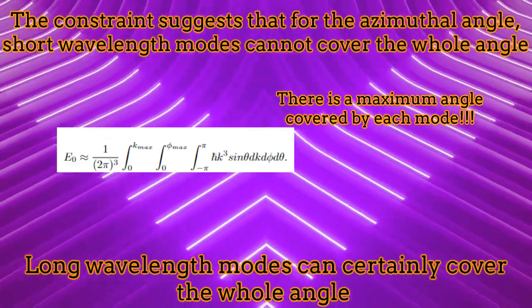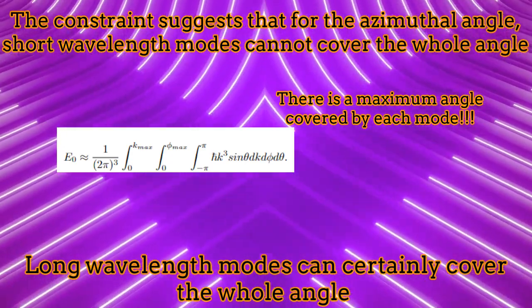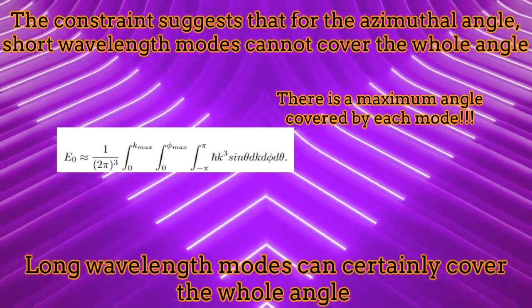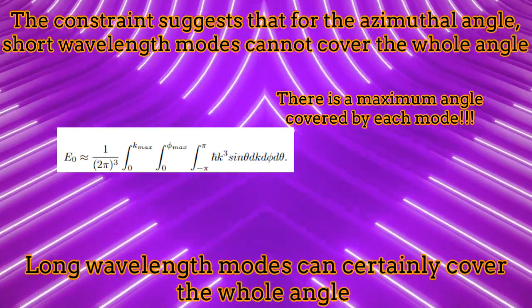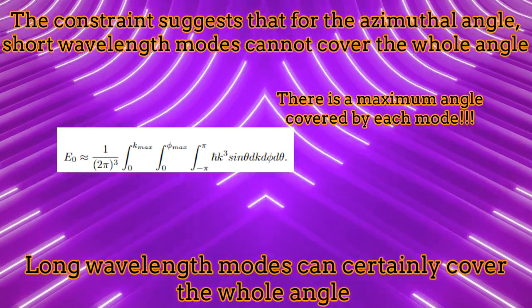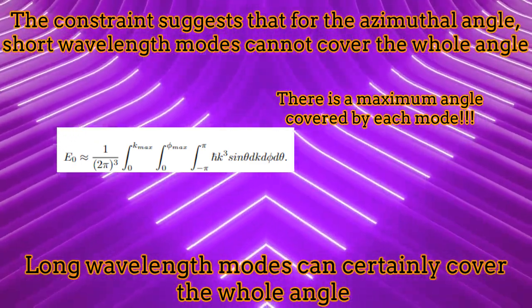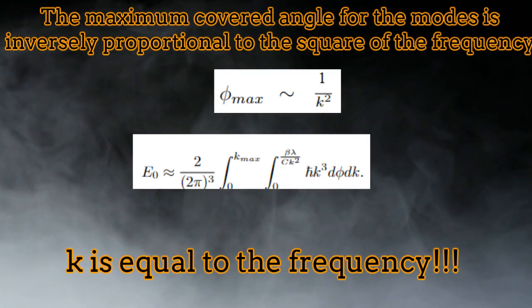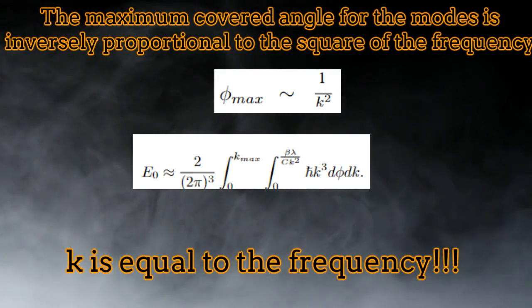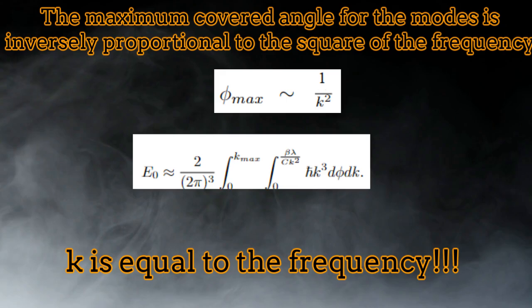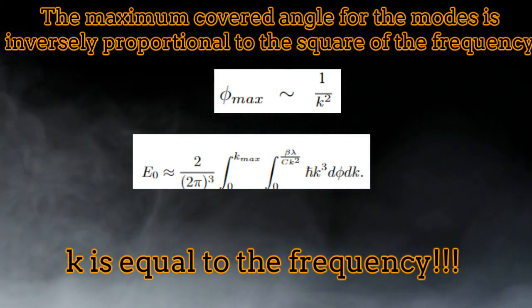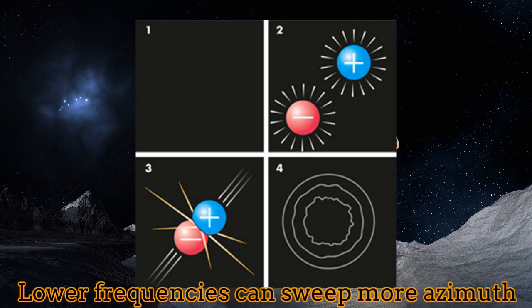More specifically, there is a maximum azimuthal angle for each frequency mode. The larger the frequency of the mode, the shorter will be the angle which the mode is able to cover over the integral. Then, naturally, the integration gets some suppression. More specifically, the maximum azimuthal angle covered by each mode is inversely proportional to its frequency. This makes sense physically.